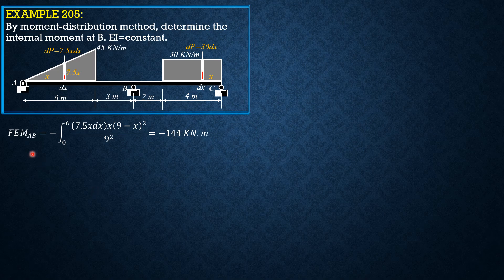Fixed-end moment BA is the same integral positive 0 to 6 times X squared this time, then we have 9 minus X over 9 squared. So it is equal to 126 kilonewton meter.